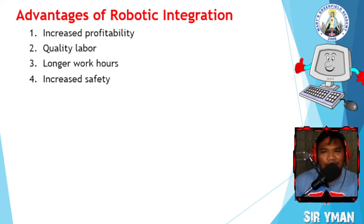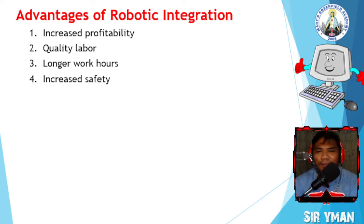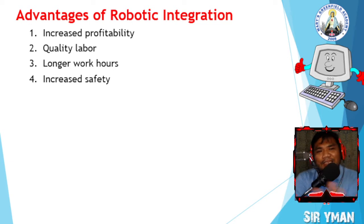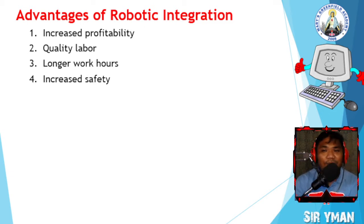Next is increased safety. Safety is one of the most important advantages when integrating robotics. Keeping your environment and workers safe is very crucial for all business owners and plant managers. Dangerous and harmful tasks can now be assigned to robots. Companies will also be able to save money from workplace injuries and resulting lawsuits.